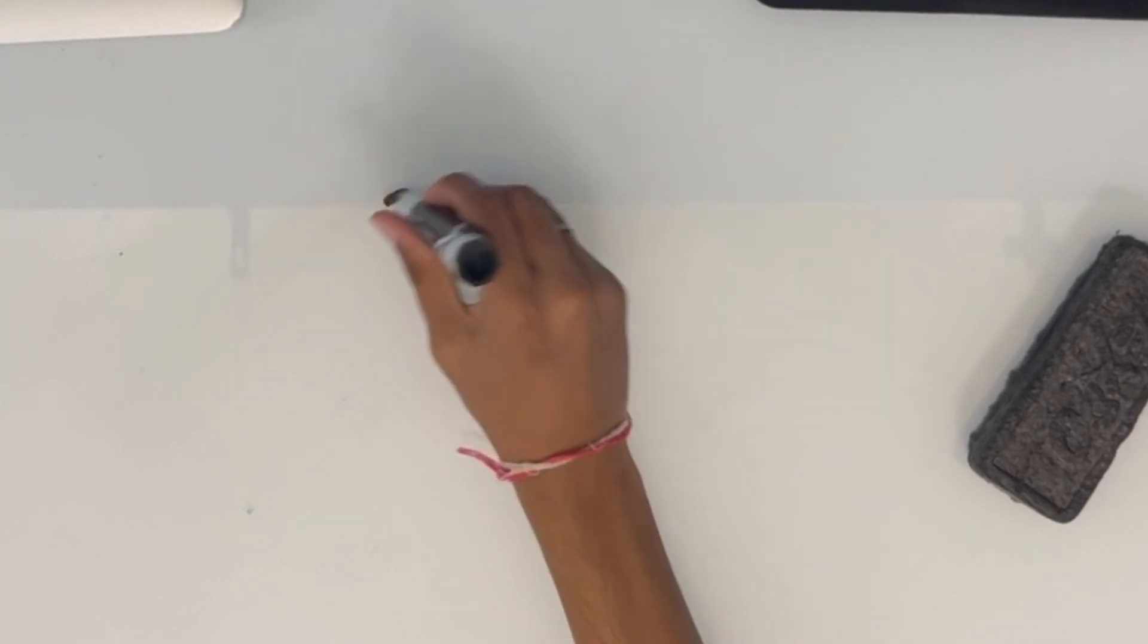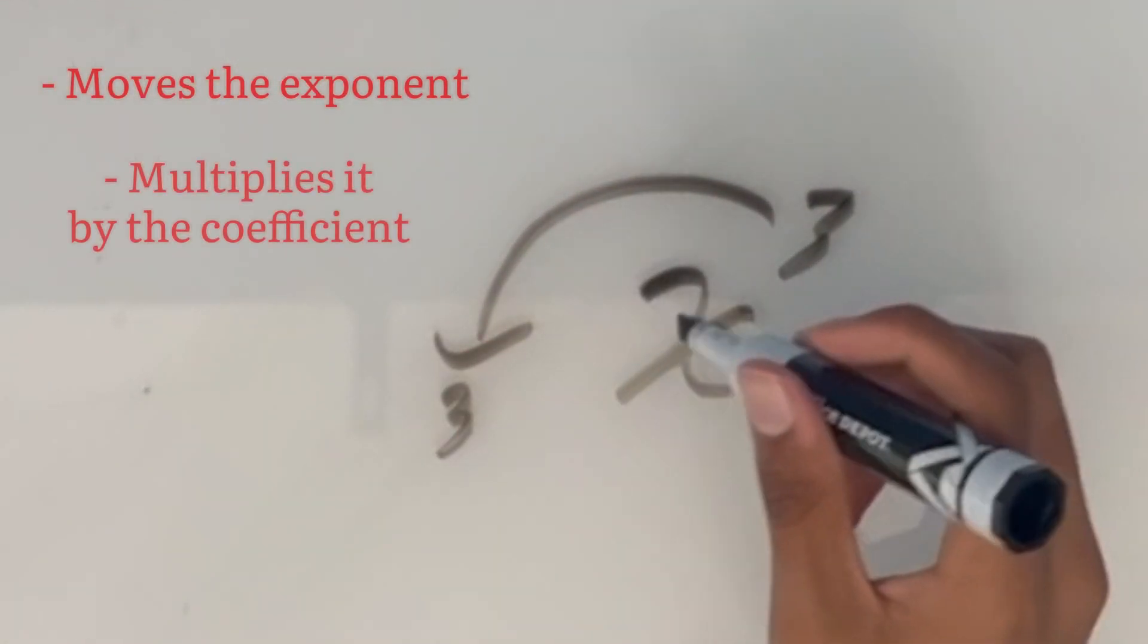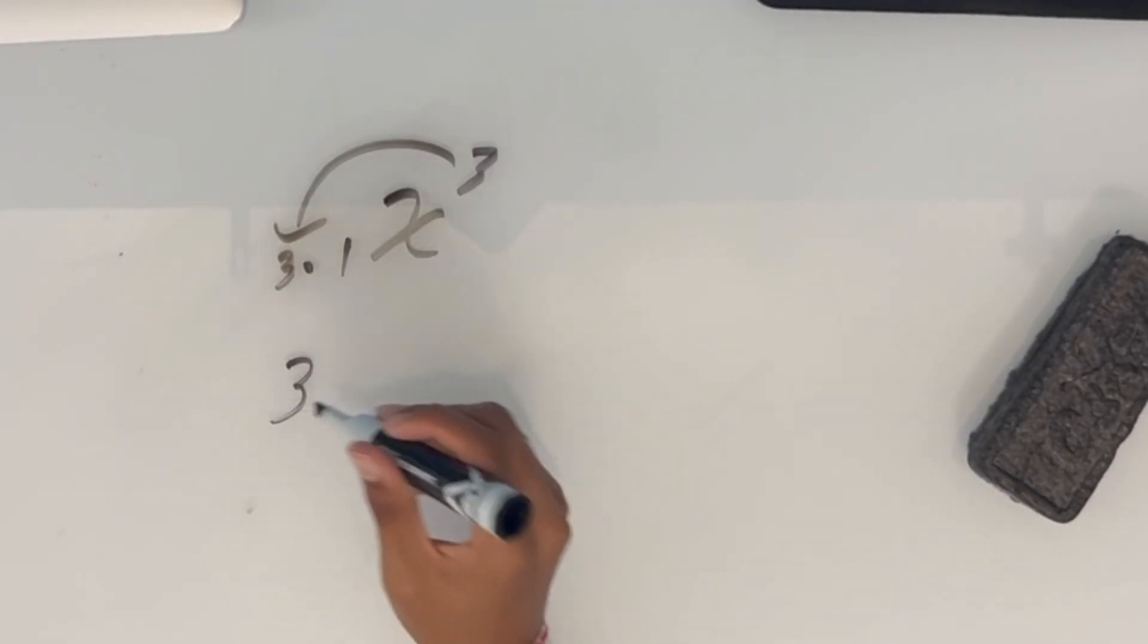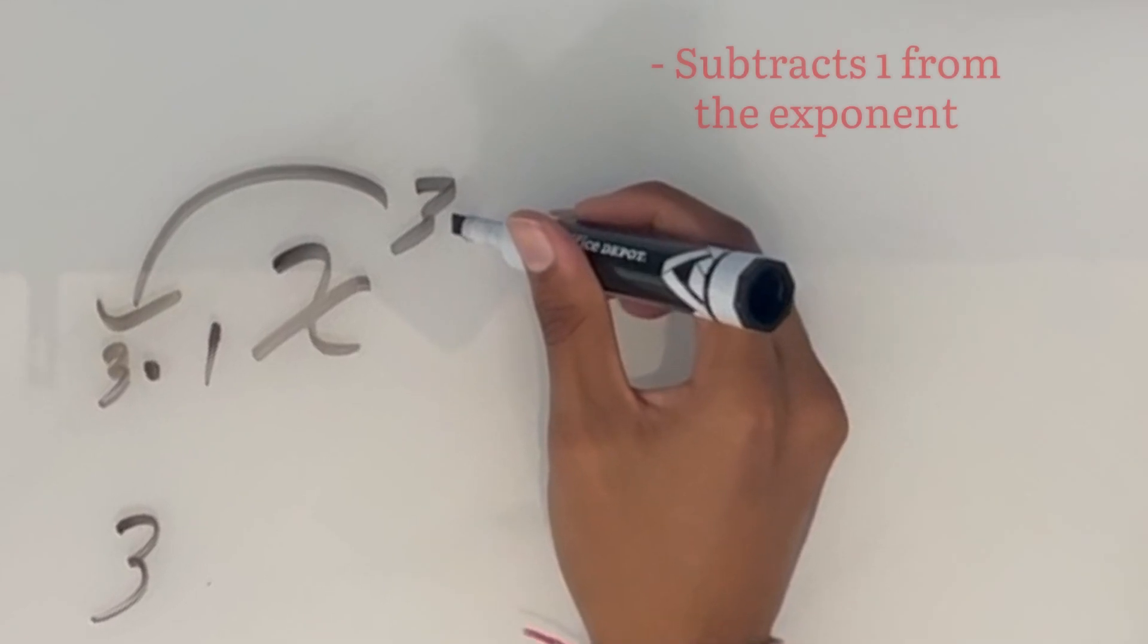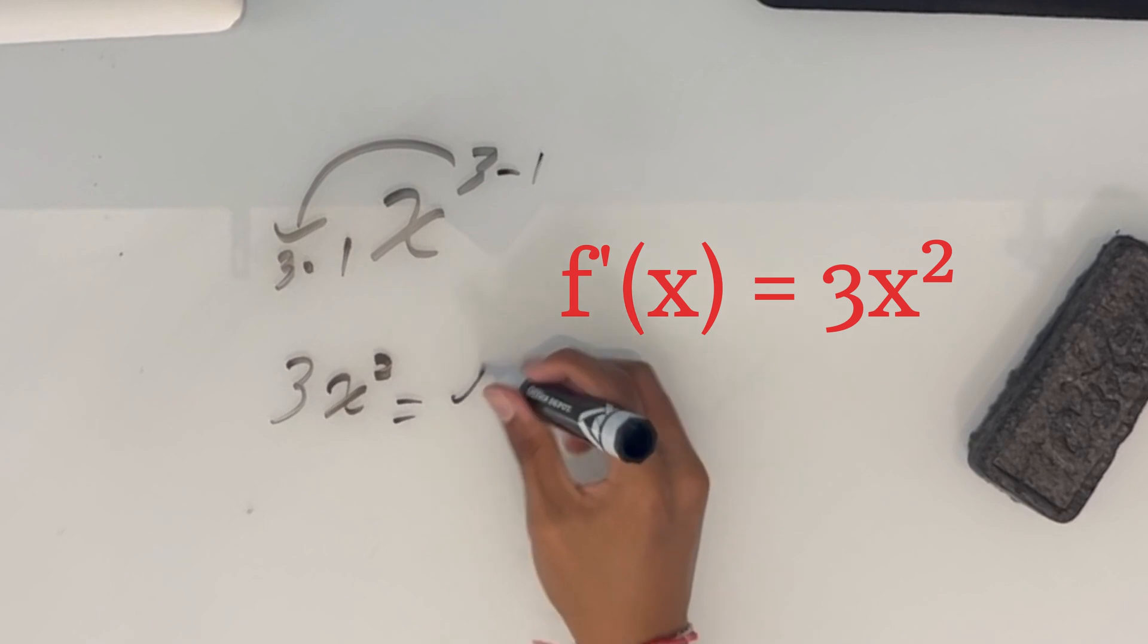In this example, x cubed, the power rule moves the exponent down here and multiplies it by the coefficient. In this case, it's 1, so 3 times 1 is leaving us with 3. But it also subtracts 1 from the exponent here, so then we're going to be left with an x squared. So 3x squared is our derivative.